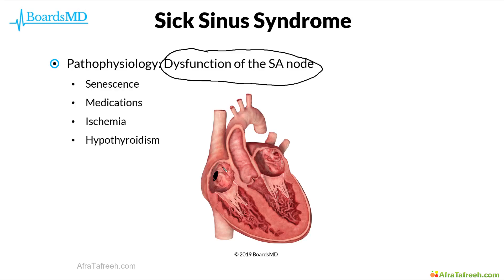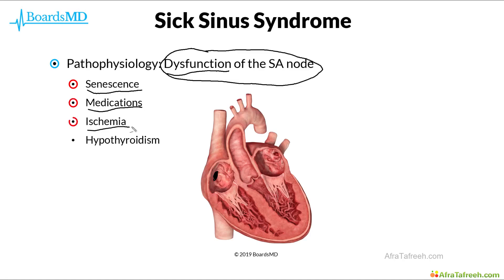There are several potential underlying causes of this dysfunction of the SA node, including senescence, which is simply damage over time with aging, various medications, ischemia, as well as hypothyroidism.